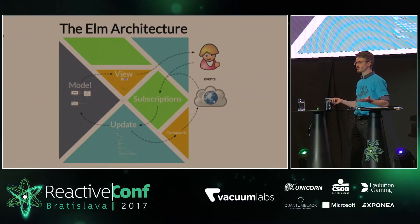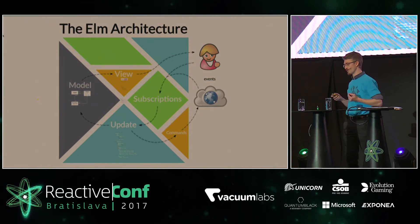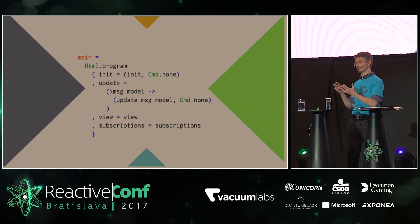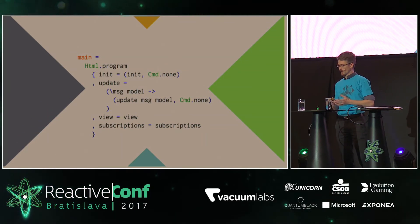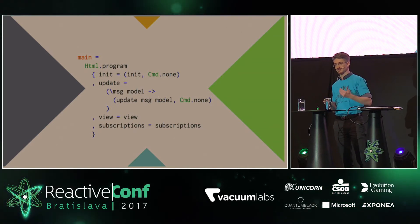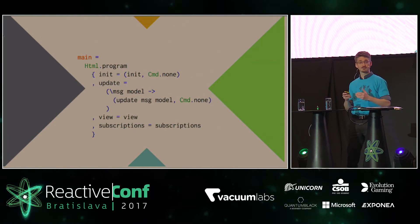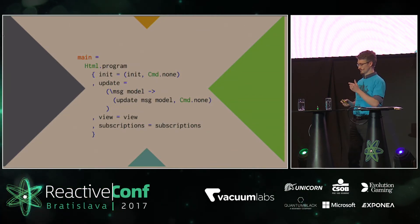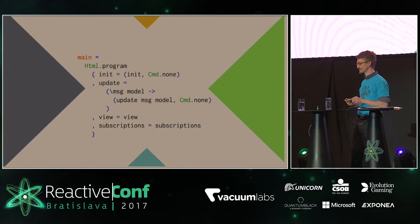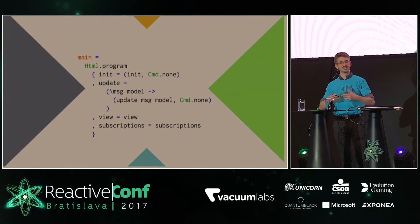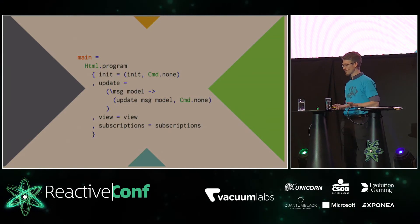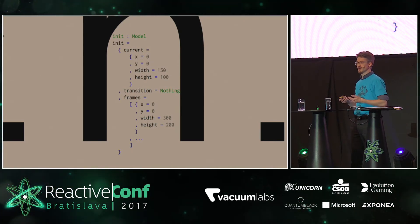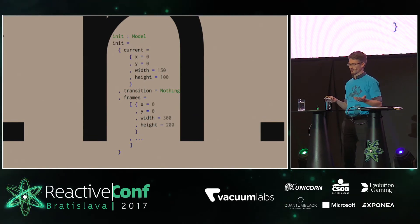That's all we need to do to build Prezi-like presentations in Elm. The final step is to wire all those parts up, which happens in Html.program — a function from one of Elm's core libraries — called in the main function, which is the main entry point of any Elm program. Here we define our subscription function, view function, and update function. And finally, init is our initial model state: we have a current frame with its values, the transition set to Nothing — because in the beginning we don't have any transitions — and our list of frames.